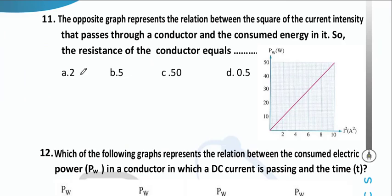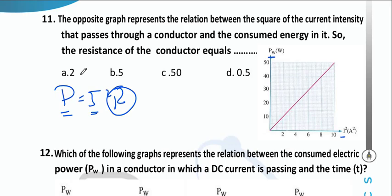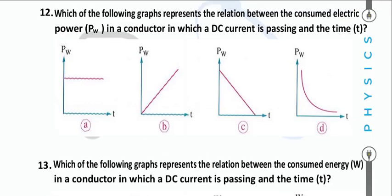A graph of power vs. I²: the slope represents resistance R. From the graph, slope = 10/2 = 5 Ω. Power = I²R is the relationship, and the slope directly gives R = 5 Ω.